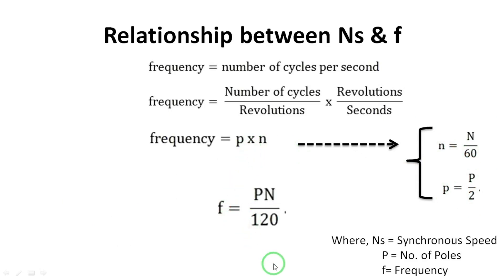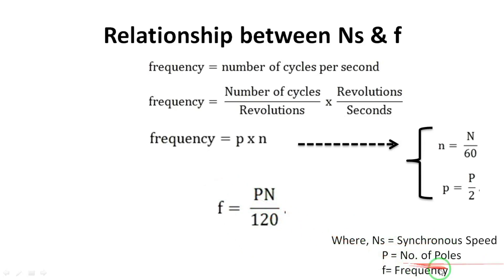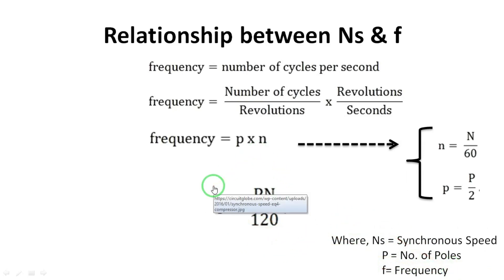Substituting both relations into the frequency equation yields the final result: F = PN/120, where capital P is the number of poles, capital N is the synchronous speed in RPM, and F is the frequency in hertz. This is the final relation between synchronous speed and frequency. Thank you very much — if you have any doubts, please comment in the comment box.